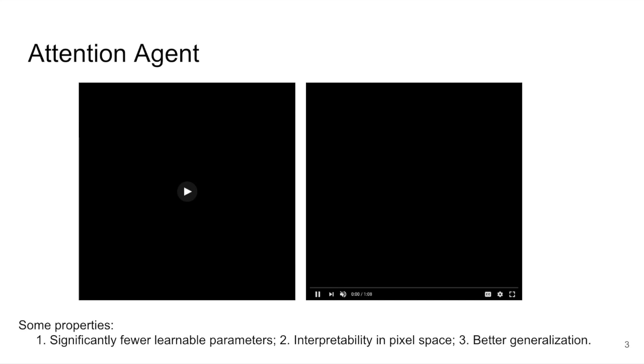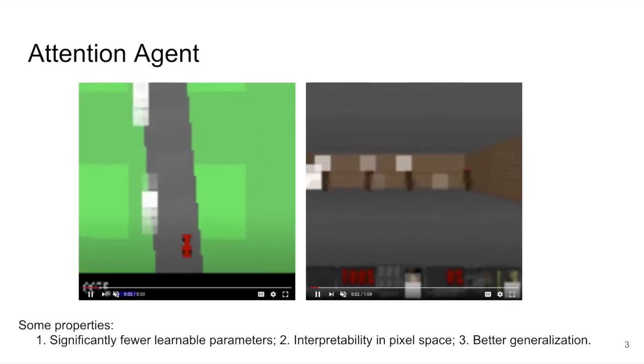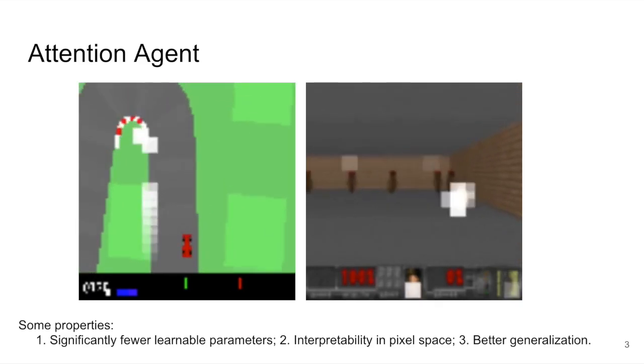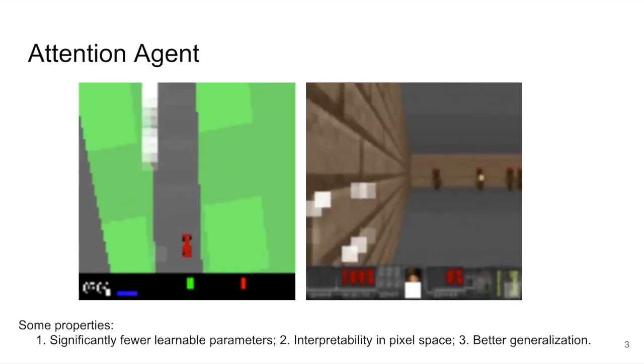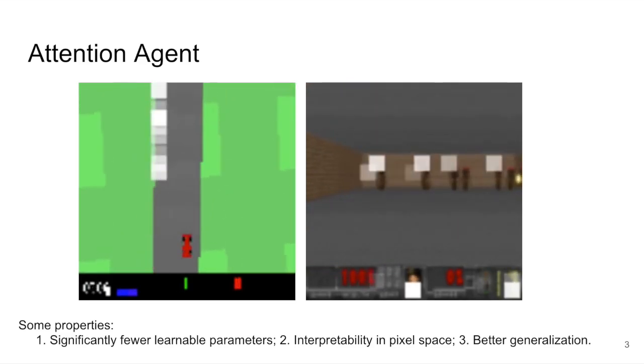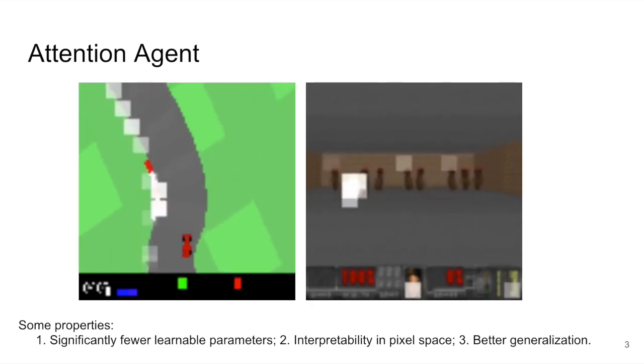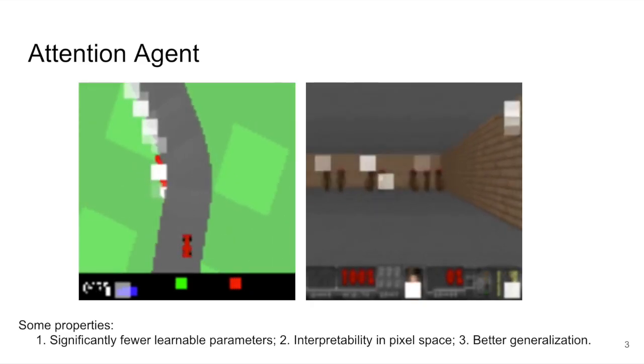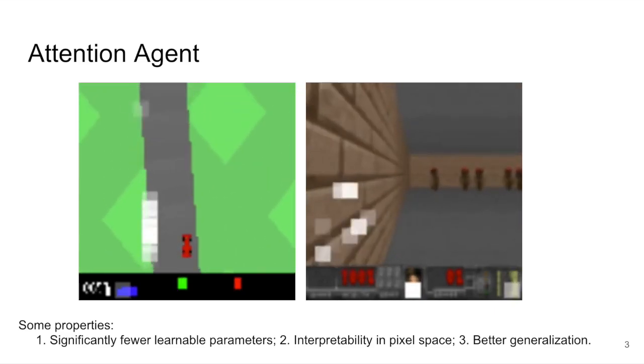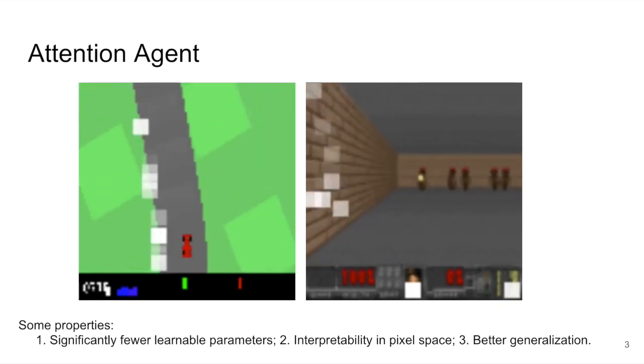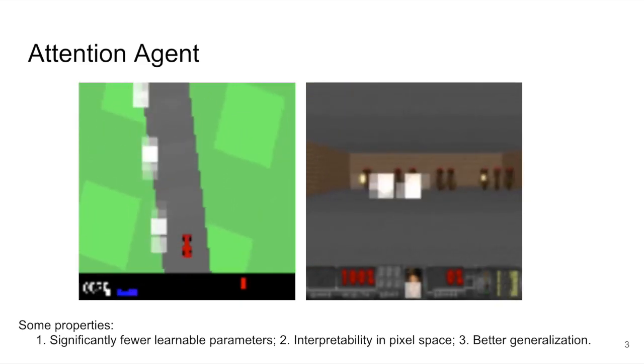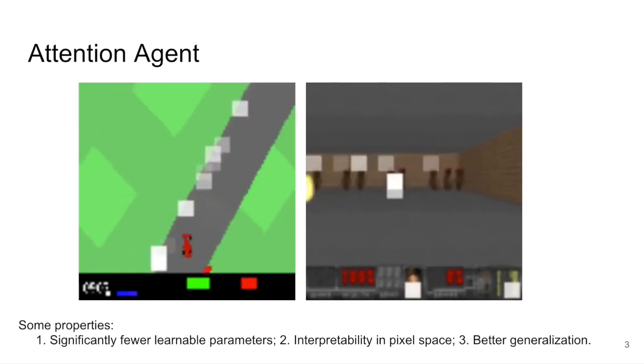This suggests that we humans have selective attention. Especially when we are engaged in effort-demanding tasks, we tend to focus on only the part that are critical to the task and are temporarily blind to irrelevant details. So, motivated by this mechanism of selective attention, we studied the properties of agents that perceive the world through the lens of an attention bottleneck. By constraining access to only a small fraction of the visual input, we were able to train agents that can not only solve challenging vision-based tasks, but also possess several good properties.